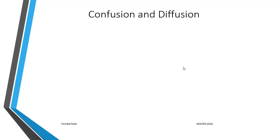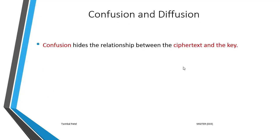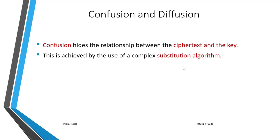Next we will see confusion and diffusion techniques. Confusion is a technique which hides the relationship between the ciphertext and the key. The main aim of confusion is to make it very hard to find the key even if an attacker has a large number of plaintext and ciphertext pairs produced with the same key. This is achieved by the use of complex substitution algorithms.